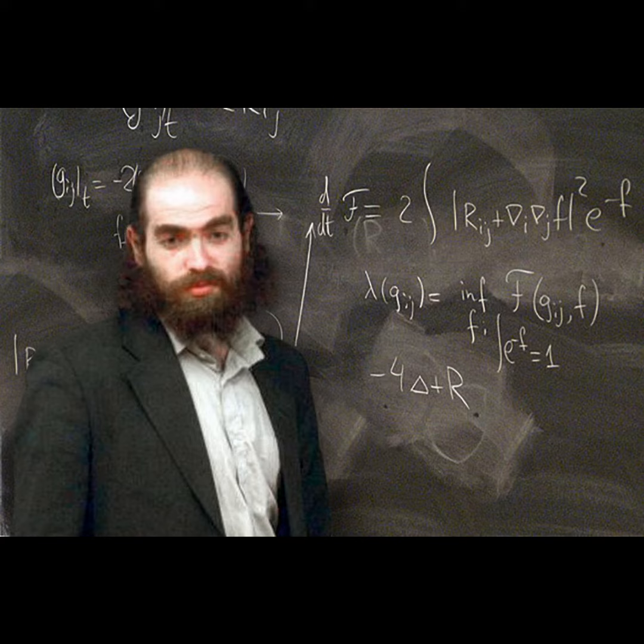The Poincaré conjecture in the fourth dimension is a famous problem in topology that was eventually solved by Grigori Perelman in 2003. Henri Poincaré's original view of the conjecture was in the context of three-dimensional manifolds, but the conjecture can also be extended to higher dimensions.